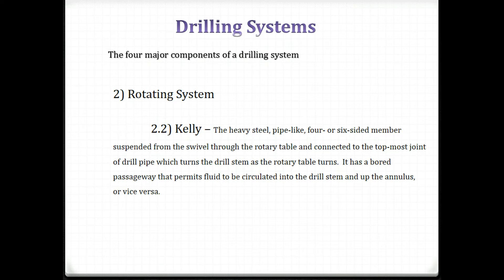The kelly is a heavy, steel, pipe-like four- or six-sided member. Suspended from the swivel, through the rotary table, and connected to the topmost joint of drill pipe, it turns the drill stem as the rotary table turns. It has a bored passageway that permits fluid to be circulated into the drill stem and up the annulus, or vice versa.